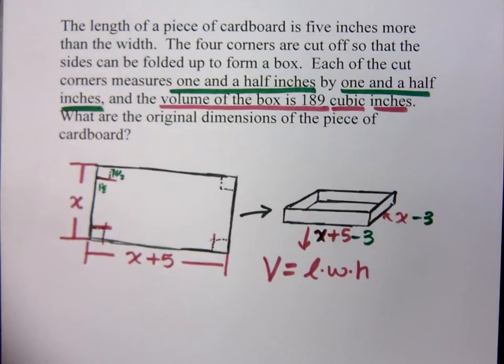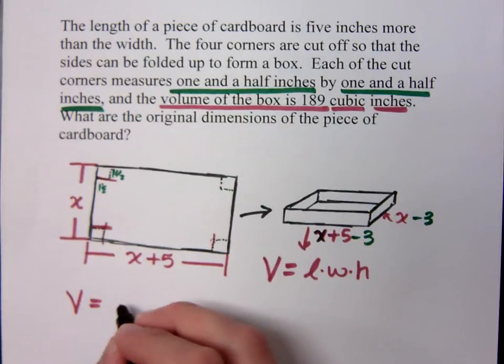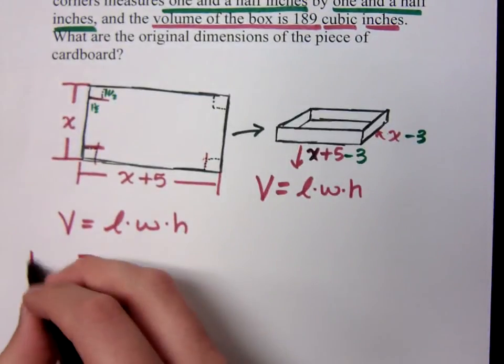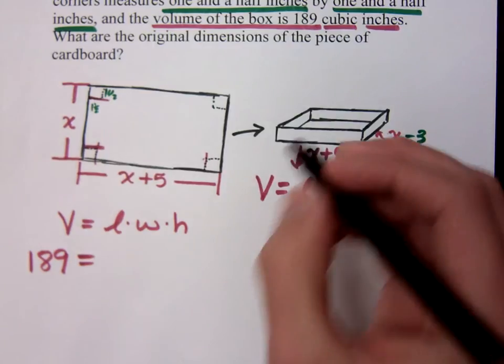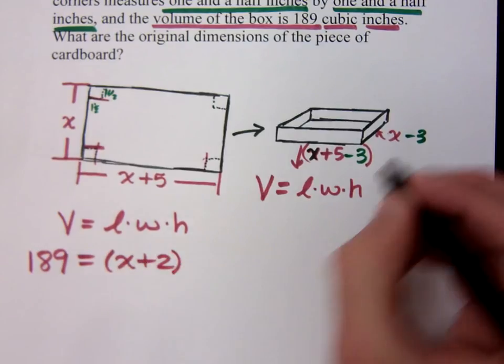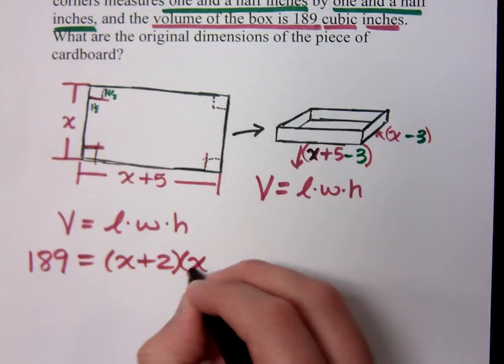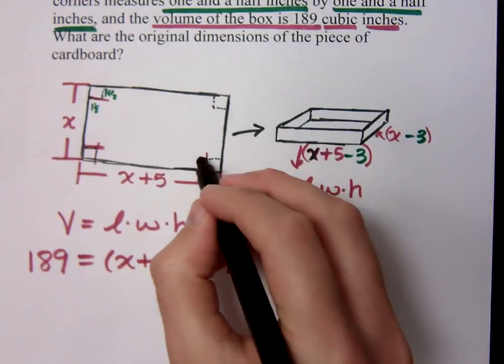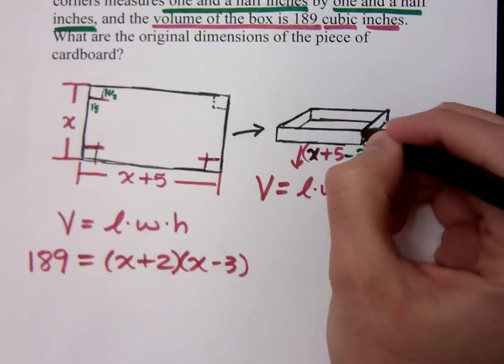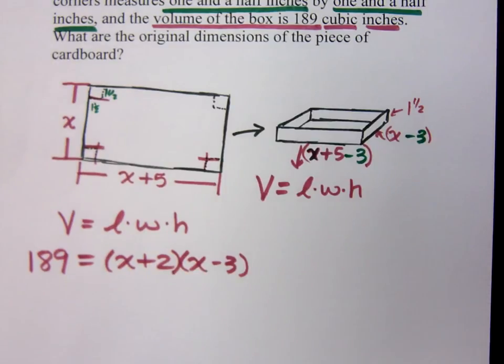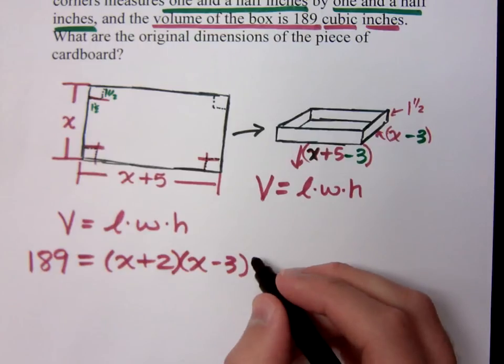So if I look at my volume here, my volume is length times width times height. Let's go ahead and start with what we know. The volume was given to us, 189. What's the length of this box now? That's X plus 5 minus 3, so that's X plus 2. What's the width? That's X minus 3. But what's the height? When you cut off these corners right here, that means you fold it up and that means this height right here is one and a half. I'm the kind of guy who likes to leave fractions so I would say three halves.